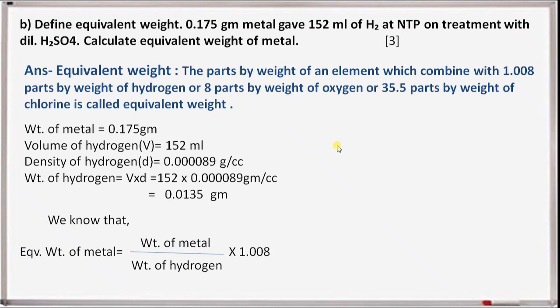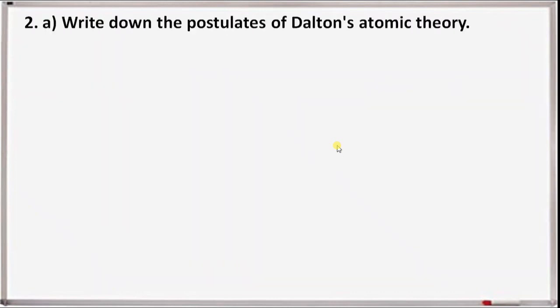We know that equivalent weight of metal equals weight of metal divided by weight of hydrogen, multiplied by 1.008. Solving: 0.175 divided by 0.0135, multiplied by 1.008, which equals 12.96. This is the equivalent weight of the given metal.